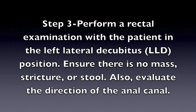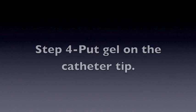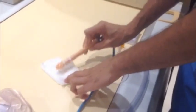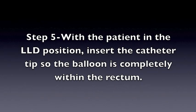Step 3: Perform a rectal examination with the patient in the left lateral decubitus position. Ensure there is no mass, stricture, or stool. Also evaluate the direction of the anal canal. Step 4: Put gel on the catheter tip. Step 5: With the patient in the left lateral decubitus position, insert the catheter tip so the balloon is completely within the rectum.